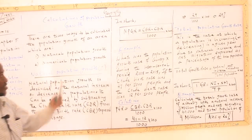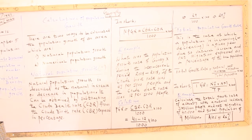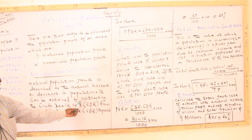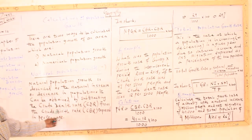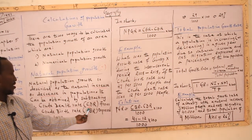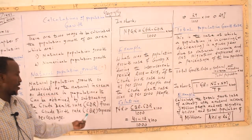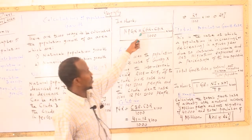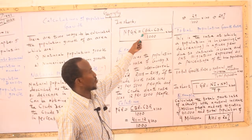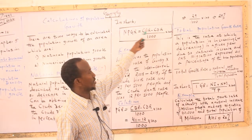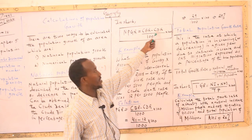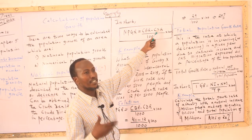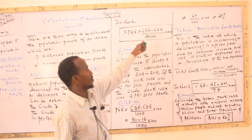This is the definition of natural population growth rate. It is called CBR — the Crude Birth Rate. As you can see, the CBR is used in this calculation.